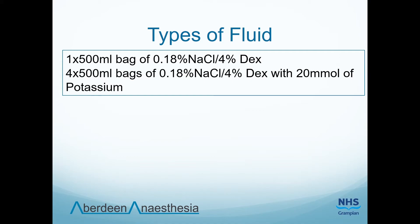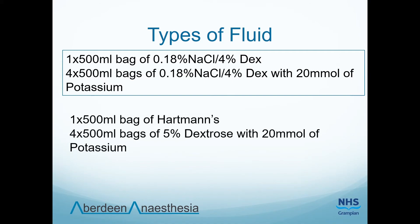This fluid is not available in many areas in Aberdeen, and it should not be given to patients who are hyponatraemic as it can exacerbate this. An alternative is to prescribe one 500 ml bag of Hartmann's and four 500 ml bags of 5% dextrose with 20 mmol of potassium in each.